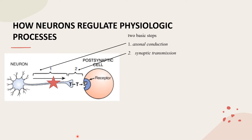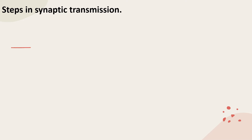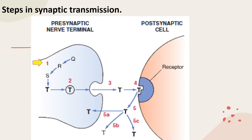Axonal conduction is simply the process of conducting the action potential down the axon of the neuron. Synaptic transmission requires the release of neurotransmitter molecules from the axon terminal, followed by binding of these molecules to receptors on the postsynaptic cell. The steps in synaptic transmission: step one is the synthesis of transmitter from precursor molecules.